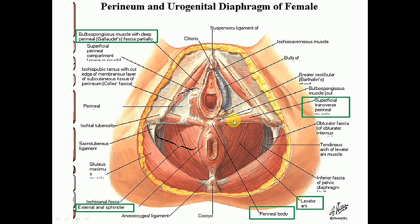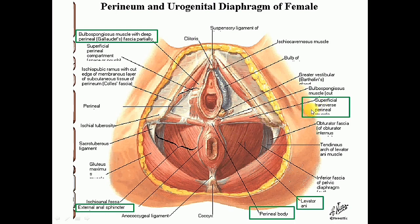The paired muscles converging into the perineal body include superficial transversus perini muscle, deep transversus perini muscles, paired bulbospongiosus muscles — which cover the bulb of vestibule on each side of the vestibule of vagina — and the pubococcygeous parts of the levator ani muscle. The unpaired muscles include the external anal sphincter and the longitudinal muscle coat of the rectum and anal canal.